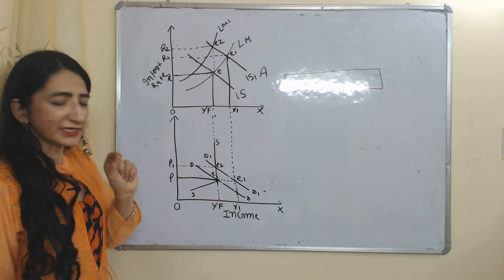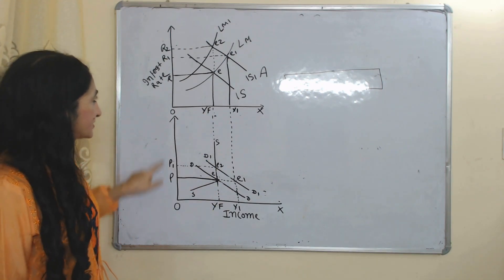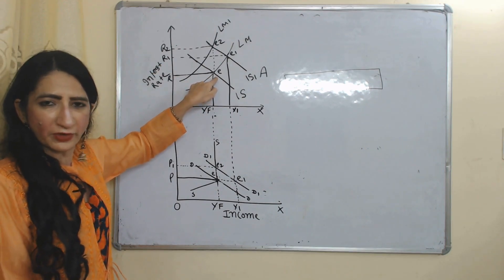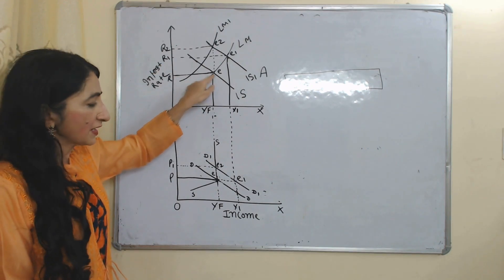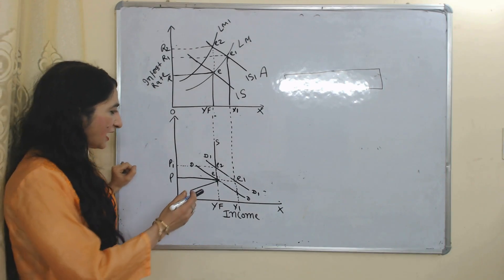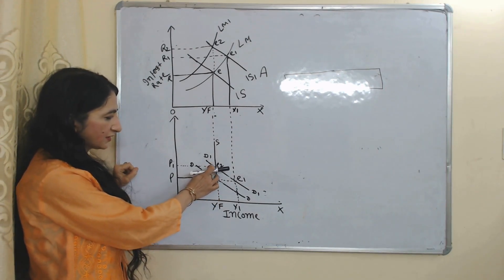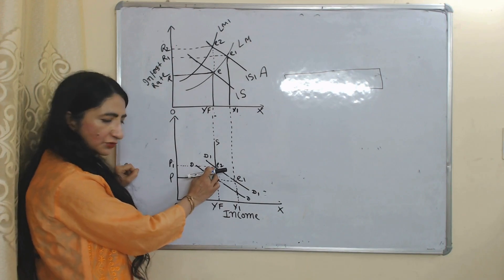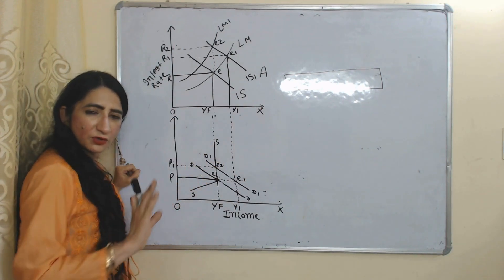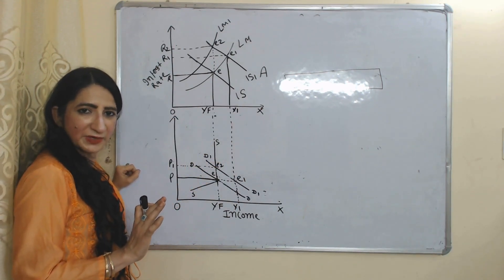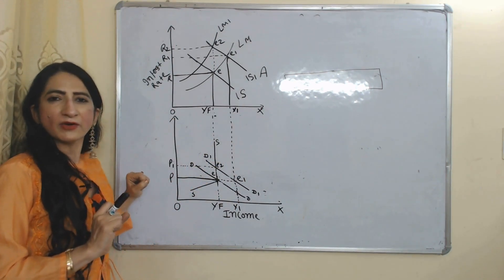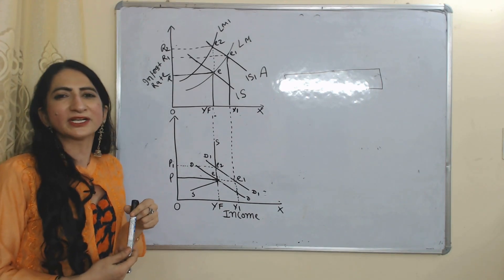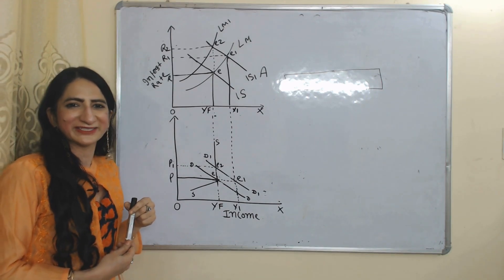Corresponding to this, in the other diagram our new equilibrium point is also E2. At both E2 points, we have achieved our full employment income Yf, but at higher prices and a higher interest rate compared to the previous full employment level. One important thing is that at this E2 point, our excess demand — which was increased because of government expenditure — has reduced. So this is all about Keynes's theory of demand-pull inflation. I think you got it. Thank you so much for watching this video. Bye, take care.